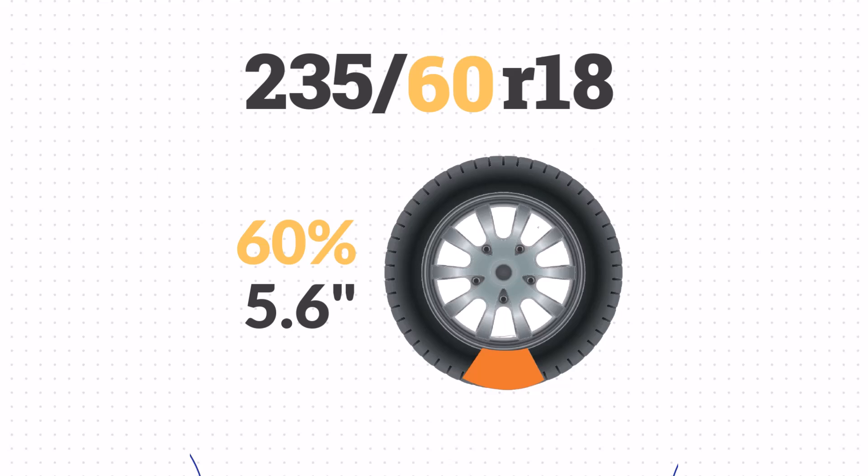To calculate the sidewall height, we multiply 235mm by 0.60, which equals 141mm or about 5.6 inches.